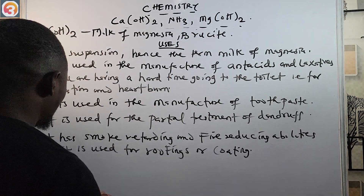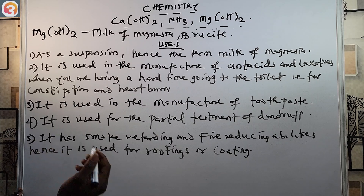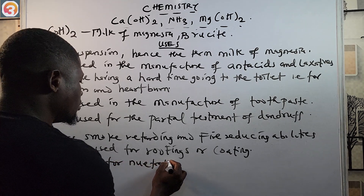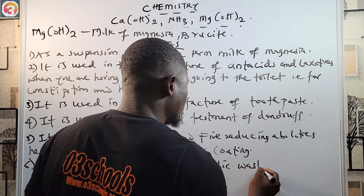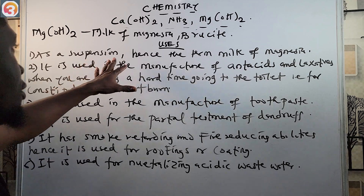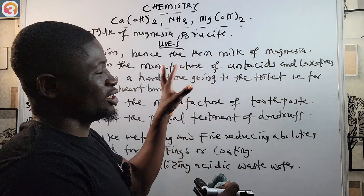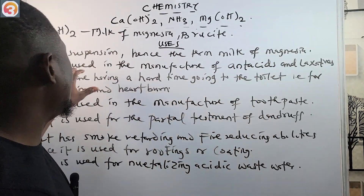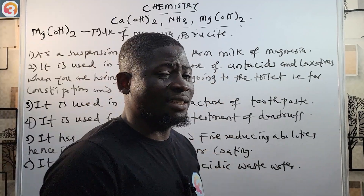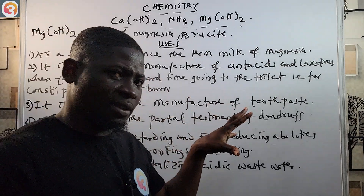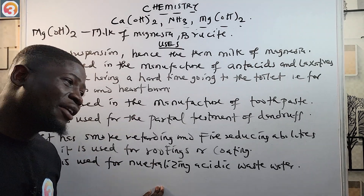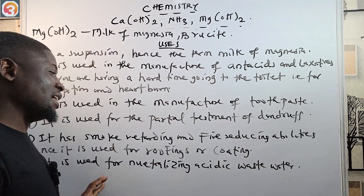Lastly, magnesium hydroxide is also useful for neutralizing acidic wastewater. So to summarize: magnesium hydroxide — milk of magnesia or brucite — is used as a suspension, in the manufacture of antacids and laxatives, in toothpaste, for partial treatment of dandruff, for smoke retarding and fire reducing in roofing and coatings, and for neutralizing acidic wastewater.